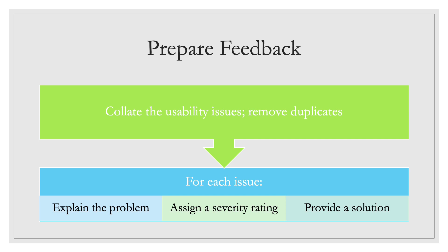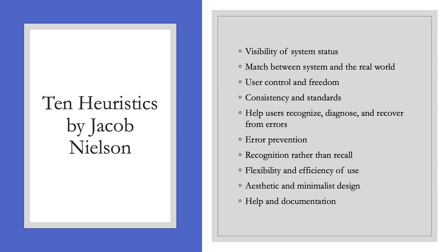The last step is preparing the feedback. You're going to be collating the usability issues and removing the duplicates — if an issue appears frequently or is very similar to another, you just need to write it down once. For each issue, you're going to explain the problem, assign a severity rating, and provide a solution. It's really important to provide a solution because companies don't want to just hear what is wrong with their site; they want to hear how they can fix it.